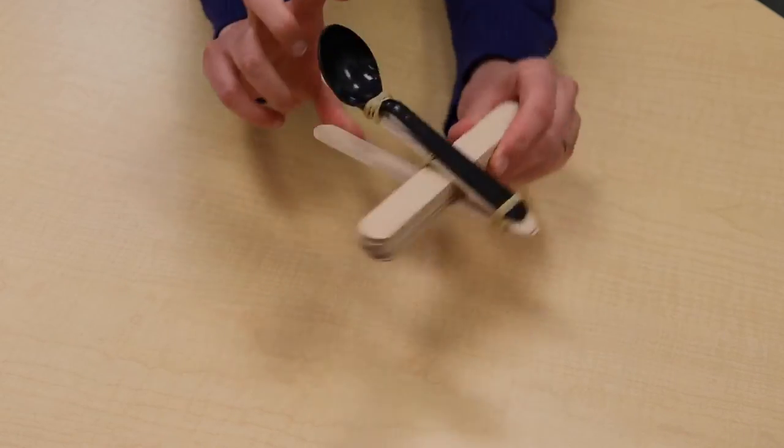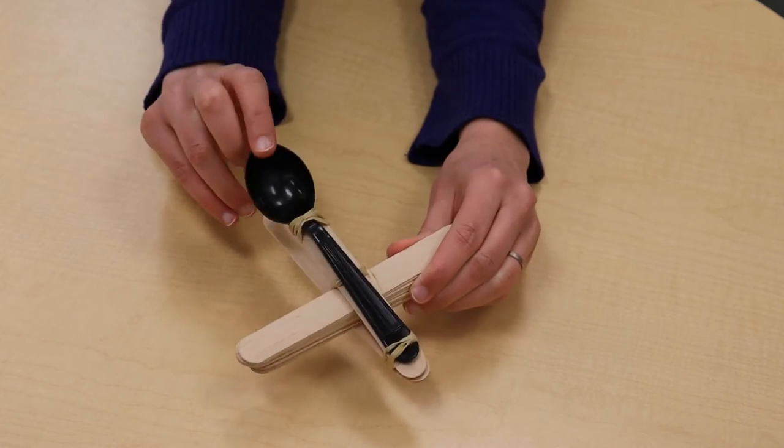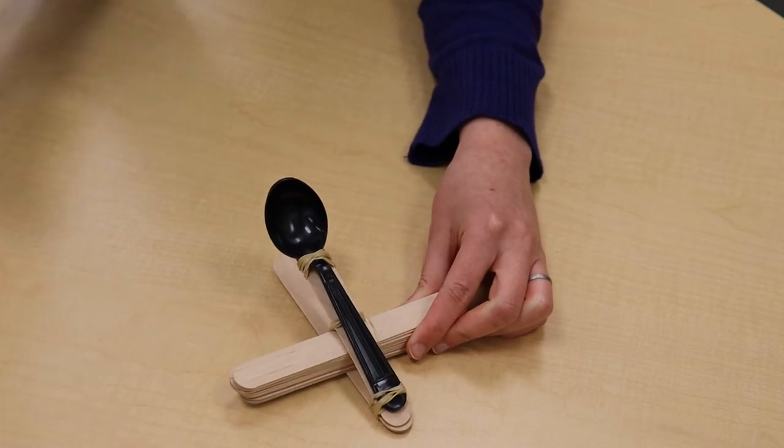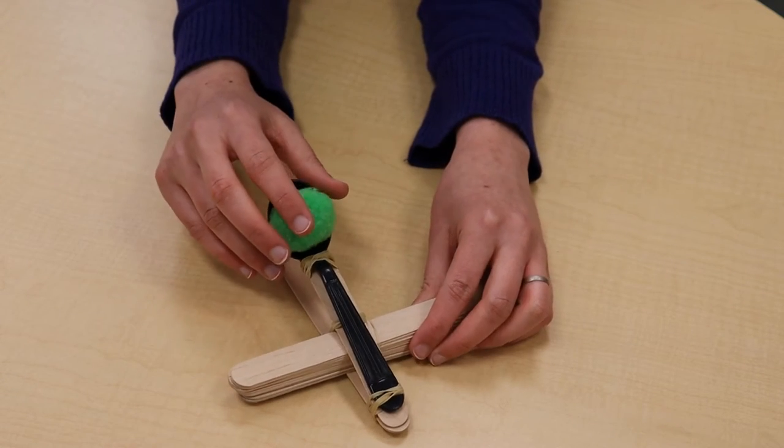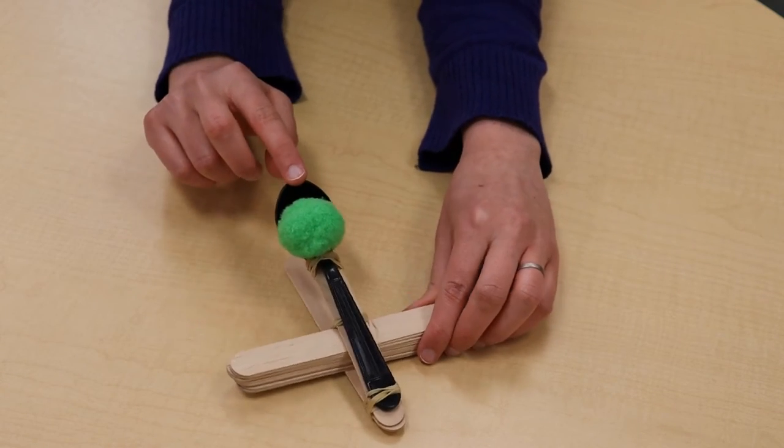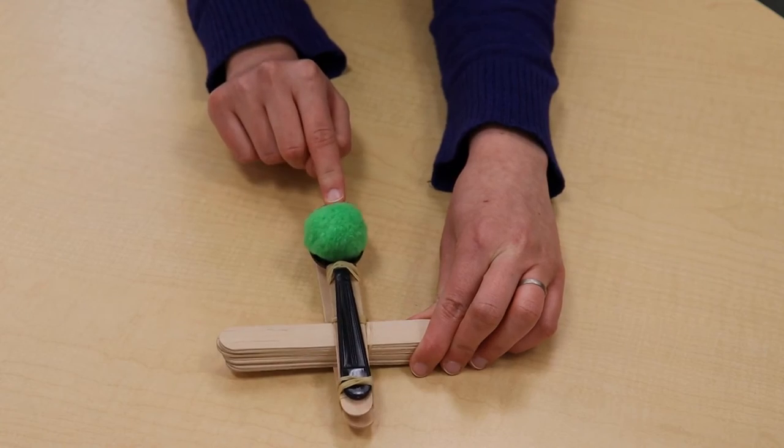So now all you need is something to launch in your catapult. I've got this lovely soft pom pom. We recommend using something soft. You don't want to hurt anyone. So you'll load that into the spoon. And here we go.